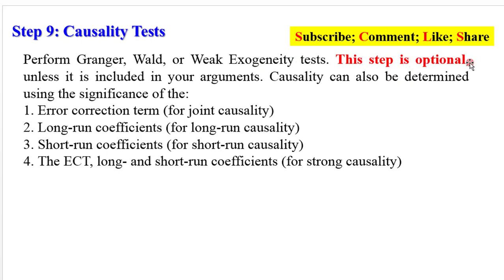This is because causality can always be inferred or determined by looking at the significance of the error correction term for joint causality or the long-run coefficients for long-run causality. The short-run coefficients will indicate short-run causality, while the combinations of the error correction term, long and short-run coefficients will indicate strong causality.